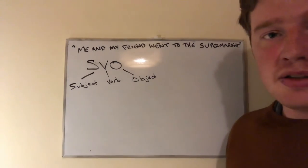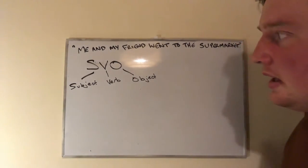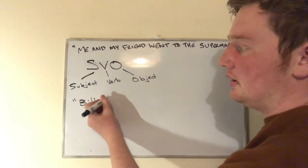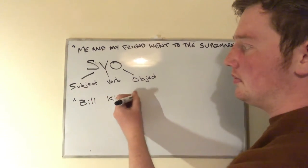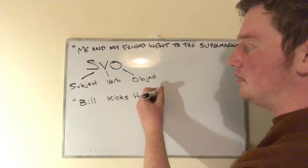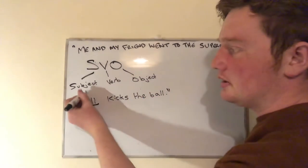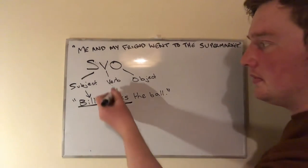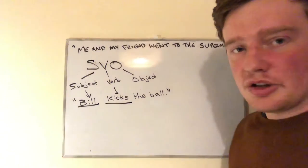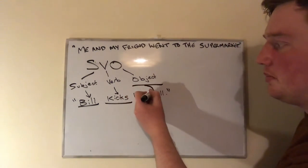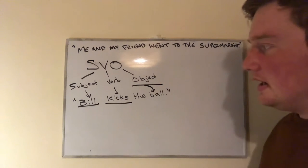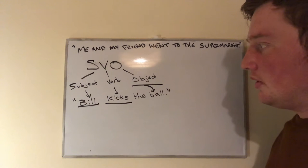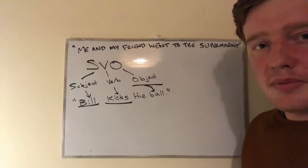The subject is that which performs the action. For example, I can say 'Bill kicks the ball.' Bill would be our subject because Bill performs the action. Kicks would be the verb, as that's the action of kicking. And our object would be the ball, because the ball is that which receives the action from the subject.